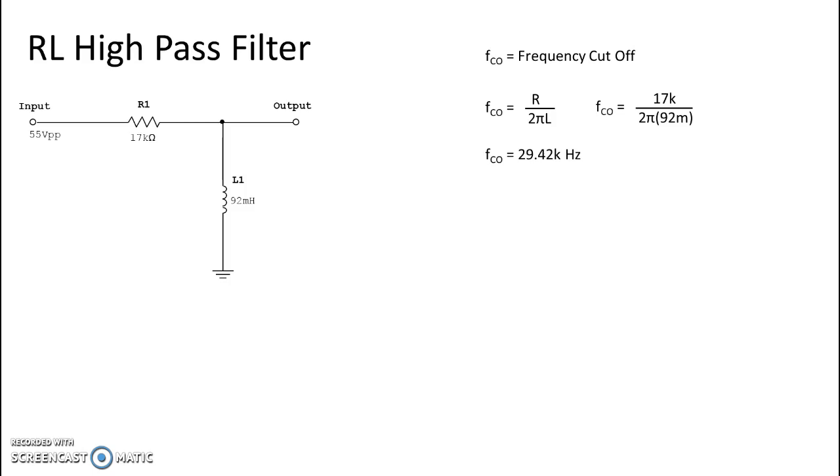We get a total frequency of 29.42 kHz. That is our cutoff point and this is a high pass filter, so it is going to have a usable voltage at 29.42 kHz and above, and we will have a non-usable voltage at any frequency below 29.42 kHz.